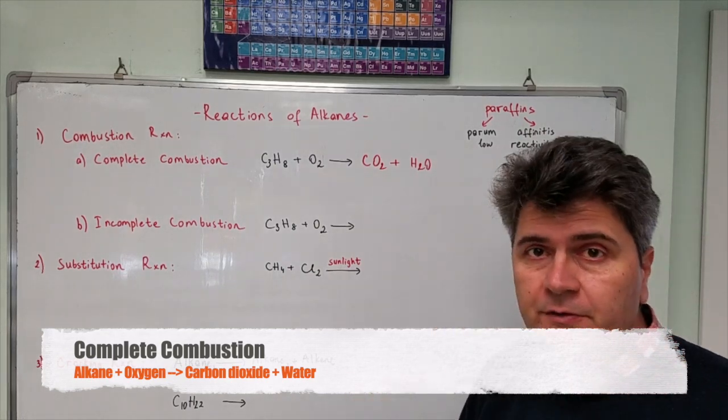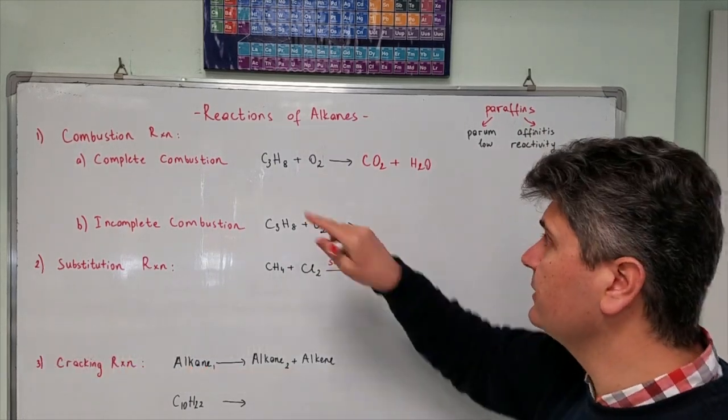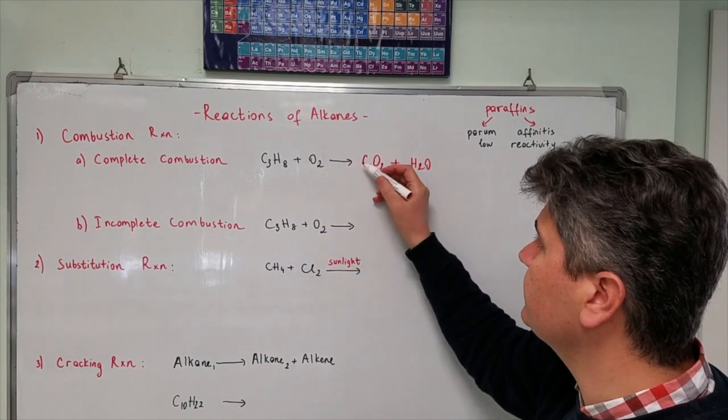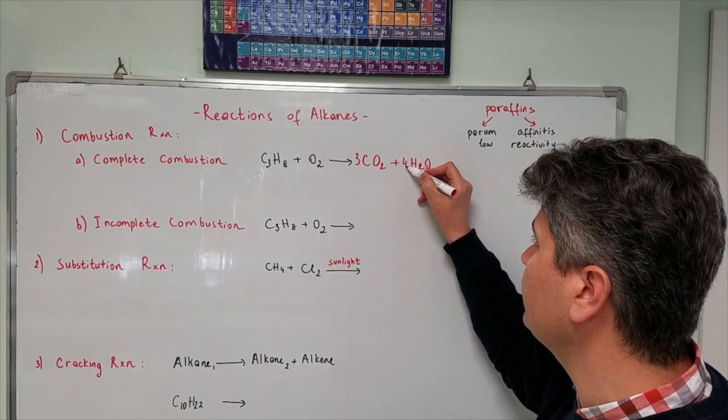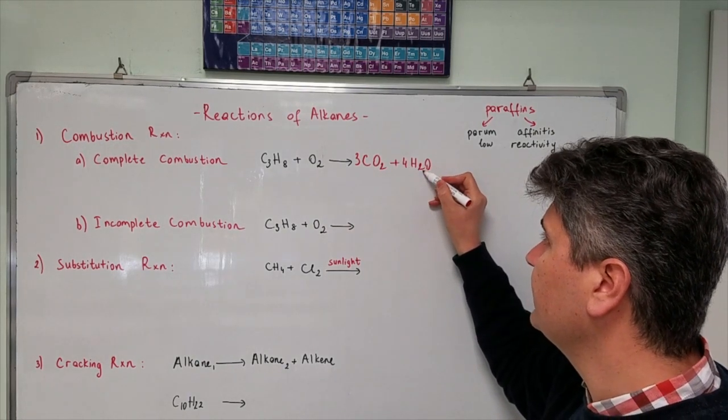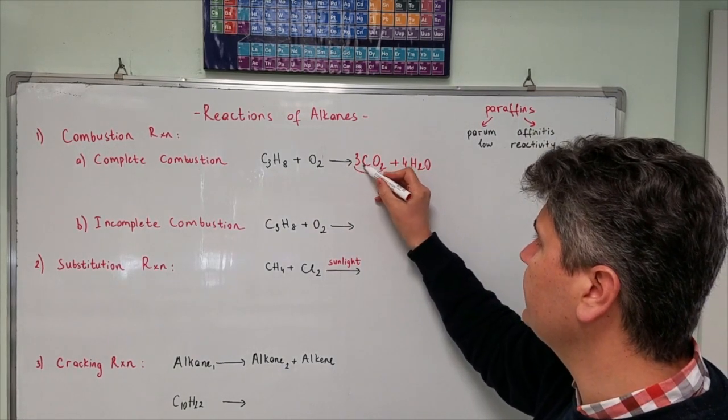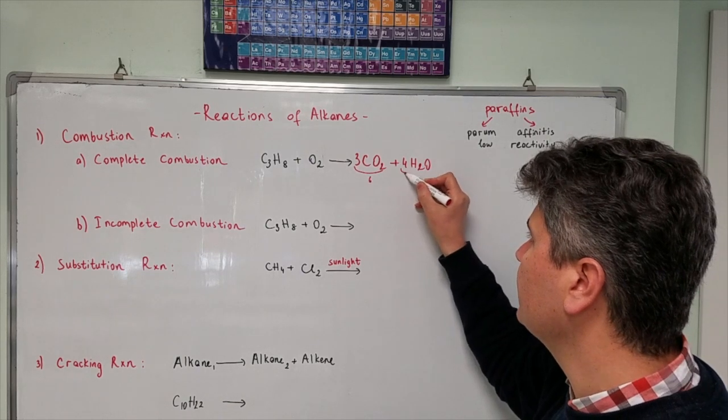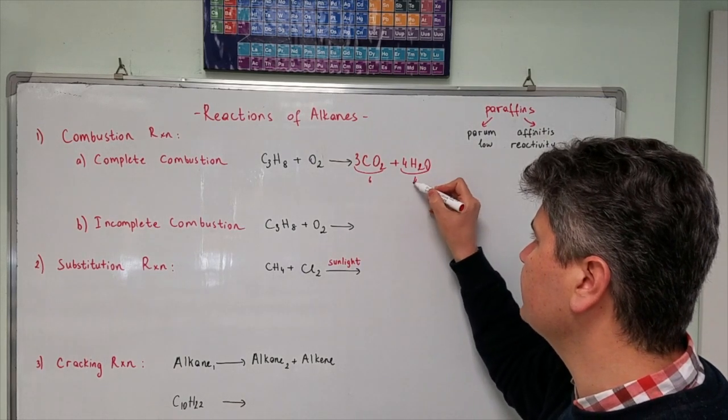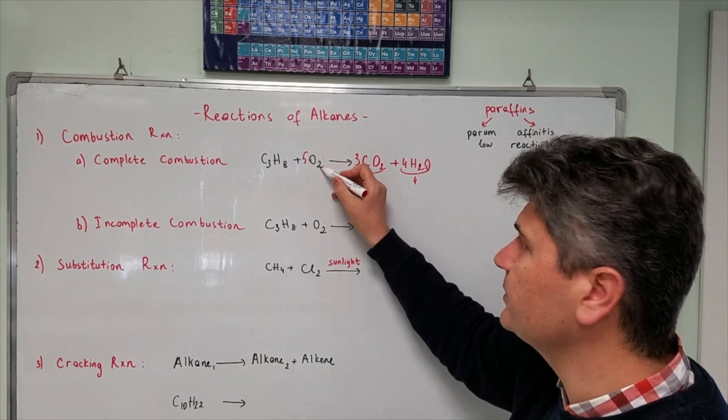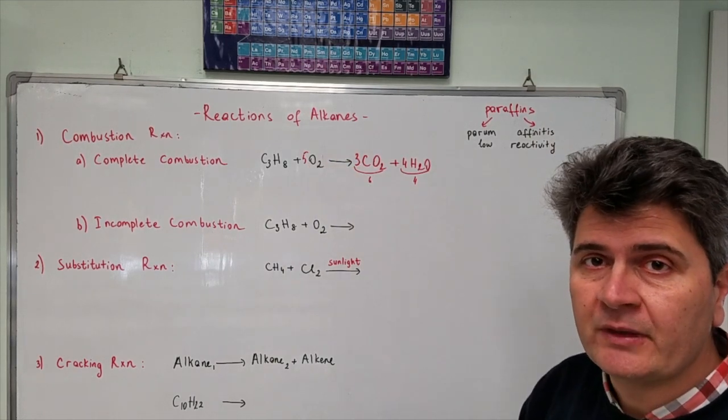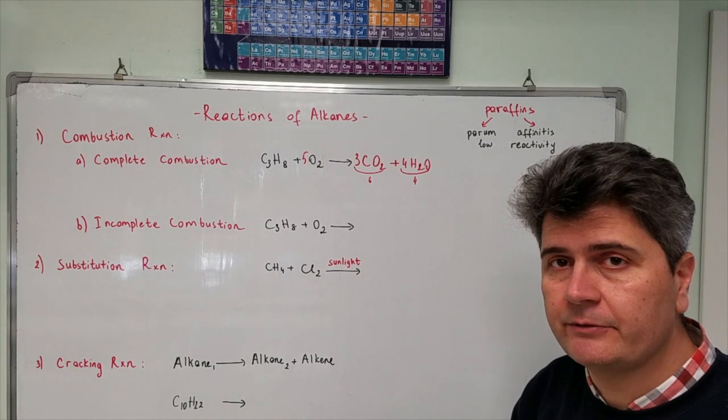We need to balance our reactions all the time. We have three carbon atoms, I need to have three. Eight hydrogens in here, so I need to write here four. Four times two is eight. Then oxygens, I have three times two, six oxygens. Four times one, four oxygens. In total it is ten. So I need to write here five times two, it is ten. This is my complete combustion reaction.